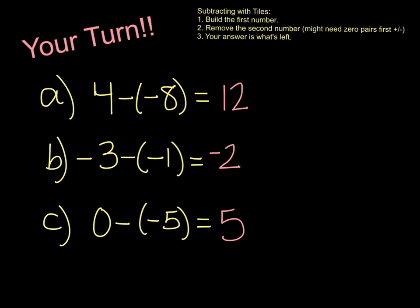All right, how'd you do? For the first one, we get an answer of 12. On the second one, we get an answer of negative 2. And the third one, we get an answer of 5. If those answers make sense, you can be done watching now. If you'd like to see me go through them, I'm going to take the next minute or so of the video to walk through those examples.